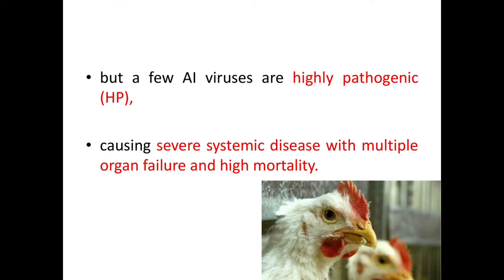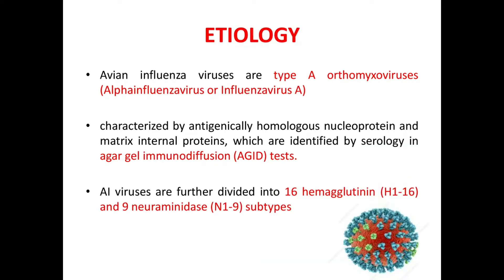There are two forms of disease: low pathogenic and highly pathogenic. Avian influenza viruses are type A orthomyxoviruses characterized by antigenically homologous nuclear protein and matrix internal proteins, identified by serology in the AGID test. AI viruses are further divided into 16 hemagglutinin and 9 neuraminidase subtypes.